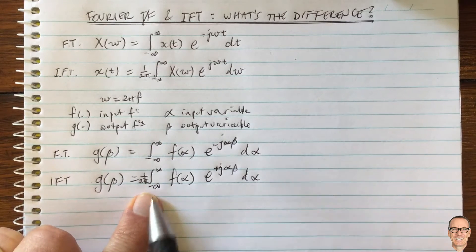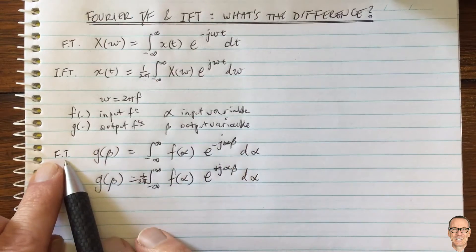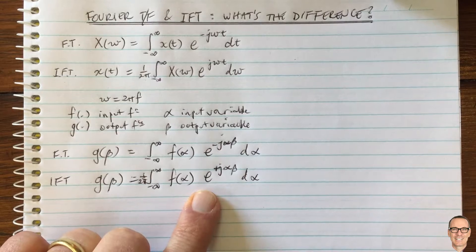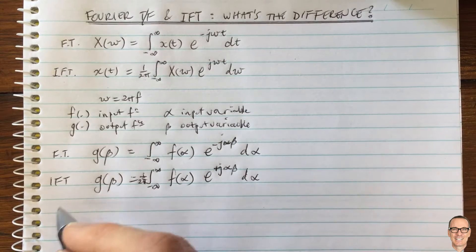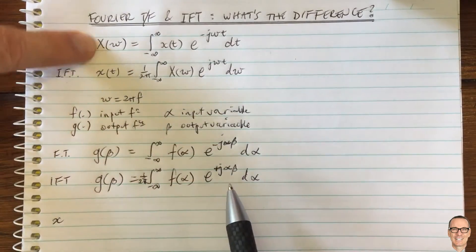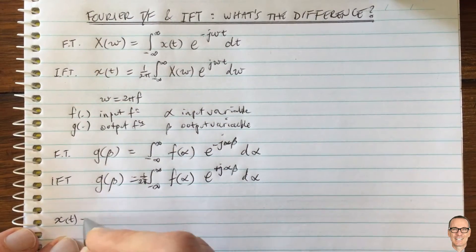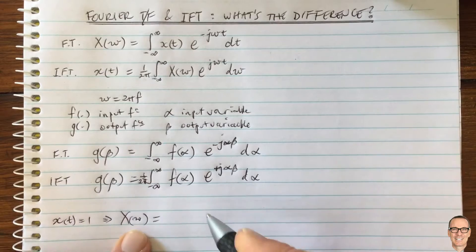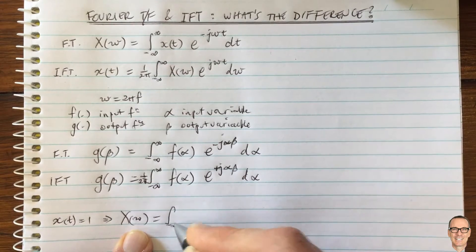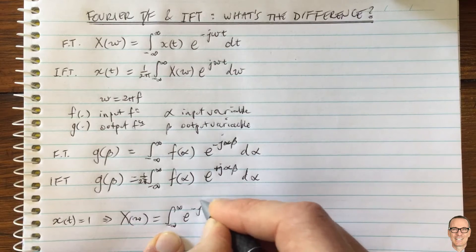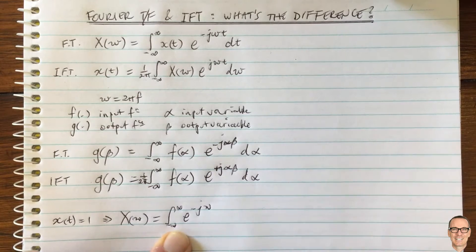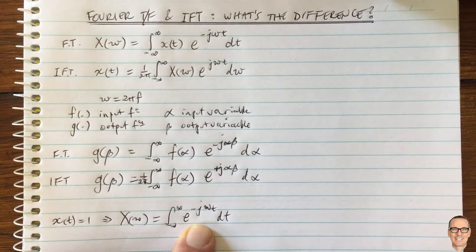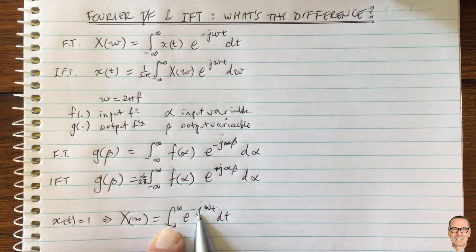So let's try to understand why we've chosen the negative for the Fourier transform. We could have chosen positive for the Fourier transform, but we chose negative — so why? To explore this, let's go back to the familiar form and consider the case where x(t) equals 1, a constant. In that case, the Fourier transform equals the integral from negative infinity to infinity of e to the minus j omega t, dt. What is this integral?